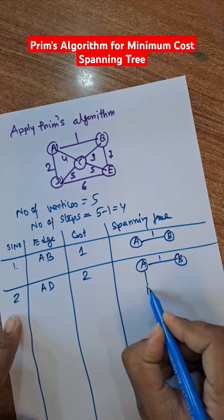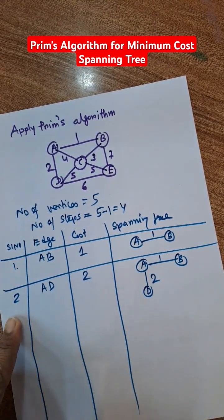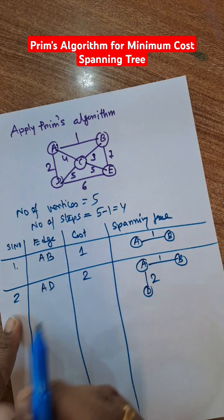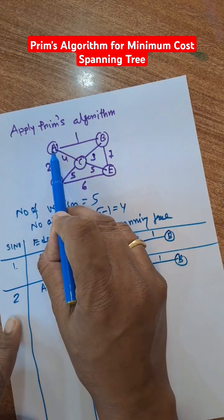So select AD. Remember that the selected vertex should be connected either from A or B.